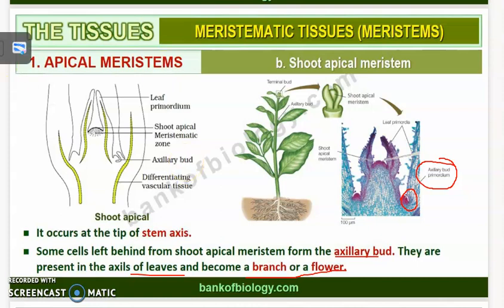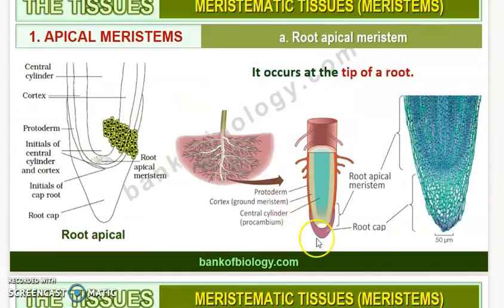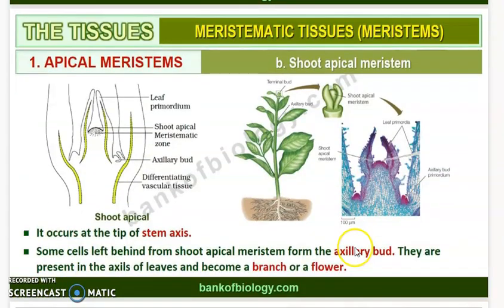Root apical meristem occurs at the tip of the root and increases the length of the root through cell division. Shoot apical meristem appears at the most distant region of the stem axis. During the formation of leaves and elongation of the stem, some cells are left behind from the shoot apical meristem and constitute the axillary buds. These axillary buds will either give rise to a branch or a flower.